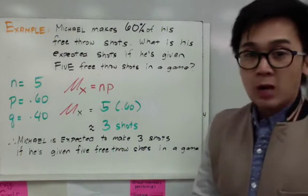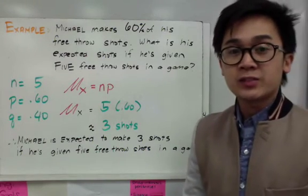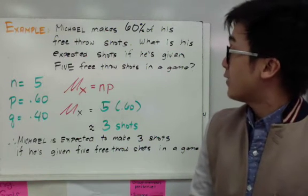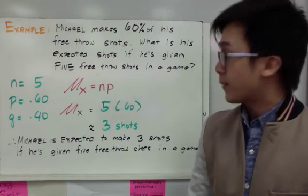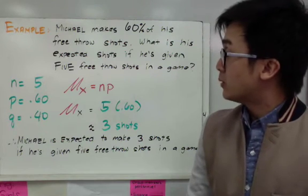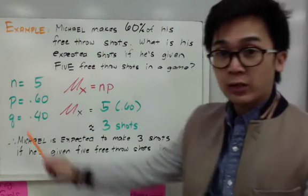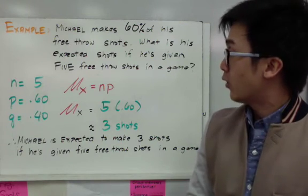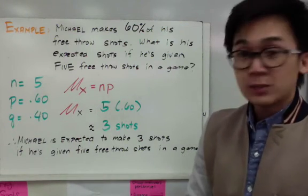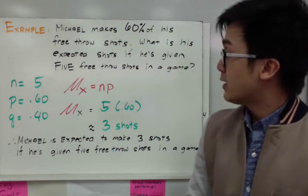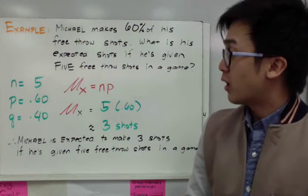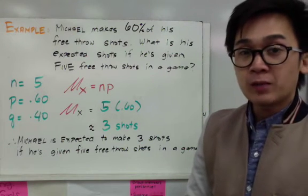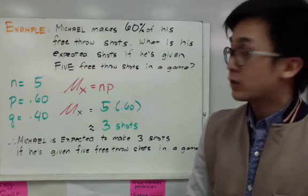Now in this given problem, Michael makes 60% of his free throw shots. What is his expected value if he's given 5 free throw shots in a given game? To answer the problem, we just need to organize our givens first. So n, which is the number of trials, is 5 free throw shots. His probability of success is 0.60, with the probability of failure of 40%. To find the expected value, we're simply finding the mean of the binomial distribution.